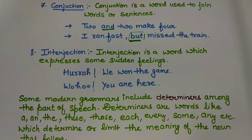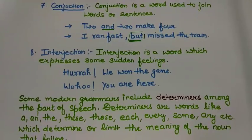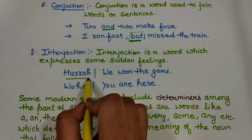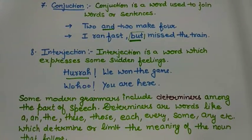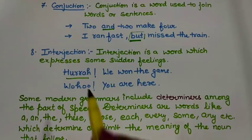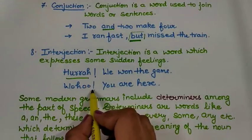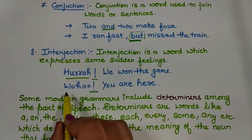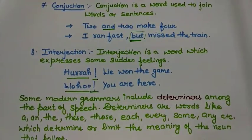The last part of speech is interjection. An interjection is a word which expresses some sudden feeling. For example, 'Hooray, we won the game!' — 'hooray' is an interjection. Another example: 'Oh ho, you are here!' You can see the exclamatory sign and can identify the interjection from it.